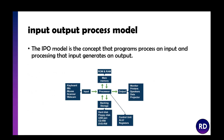The input-process-output model is a concept where programs process an input, which then gets changed or something happens to it with the CPU, and then it outputs it. We take an input from a keyboard, mouse, scanner, or webcam, and it gets sent to the processor, which will put it in main memory such as RAM. It may also get stored to a backing store such as a hard drive, and then once finished it goes to the output — a monitor, printer, speaker, or projector.